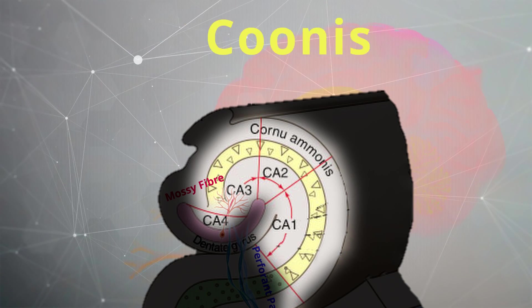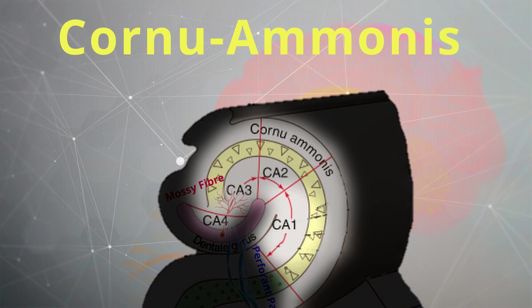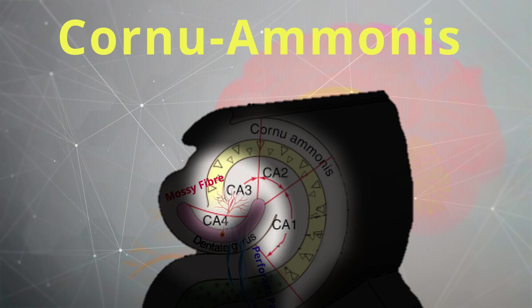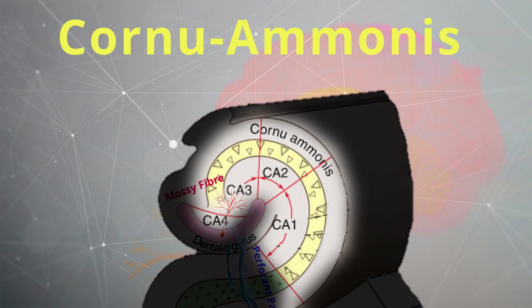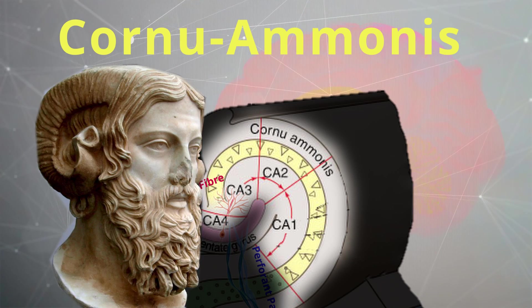CA stands for Cornu Ammonis and helps to divide the hippocampus into four subfields, from CA1 to CA4. This name actually comes from the similarity between the shape of the hippocampus to the ancient Egyptian deity Amun, who has horns of a ram.